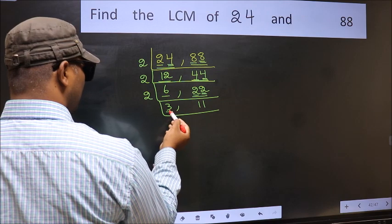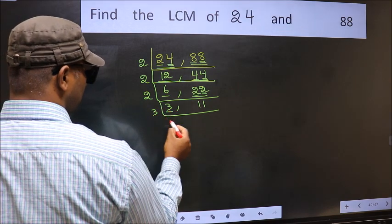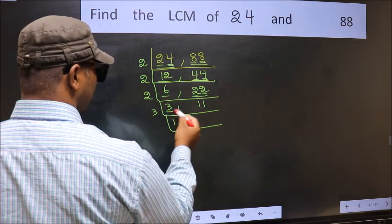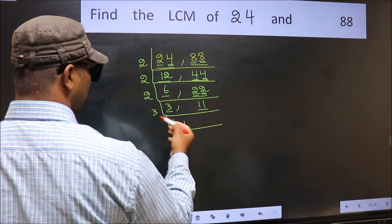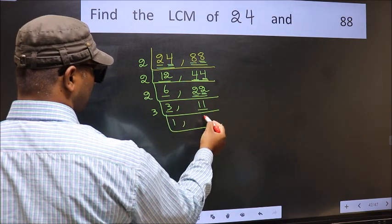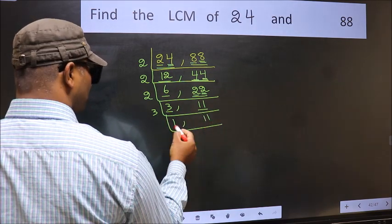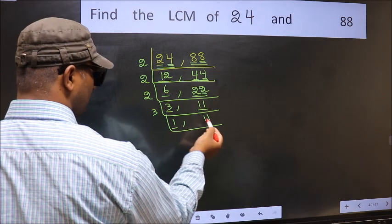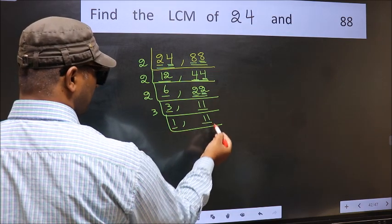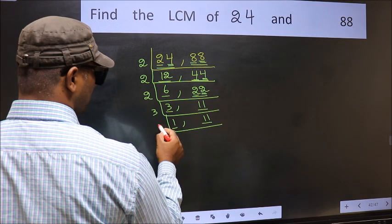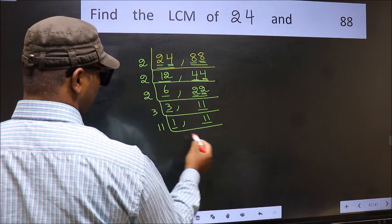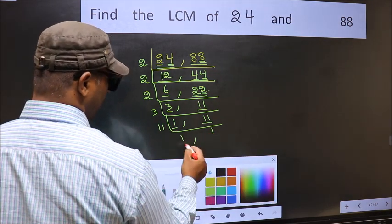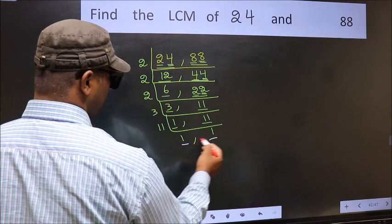Now here we have 3. 3 is a prime number, so 3 times 1 is 3. The other number 11 is non-divisible by 3, so we write it down as it is. Now we got 1 here, so focus on to the other number 11. 11 is a prime number, so 11 times 1 is 11. So we got 1 in both the places.